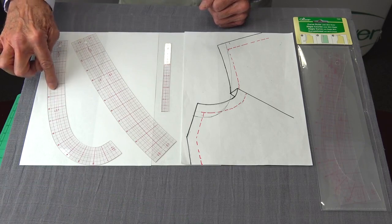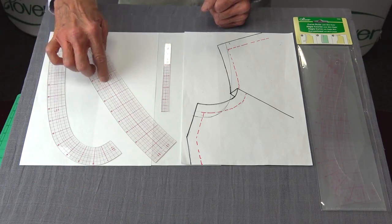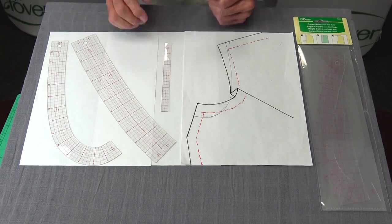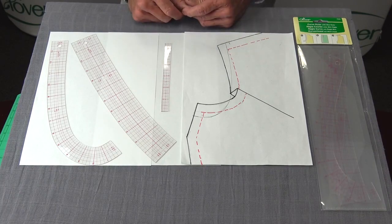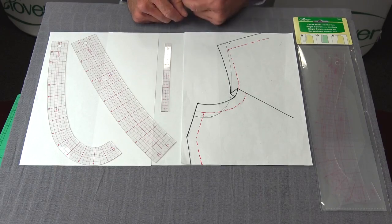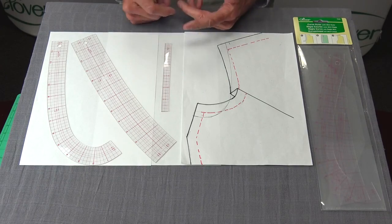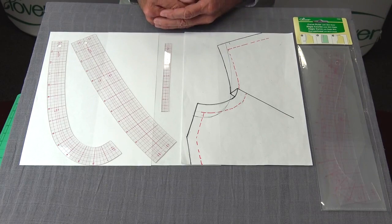What's included in that is our French curve, our hip curve, and a mini ruler. Now we know when we pull a pattern out of the envelope, it's not going to fit. We're going to have to make adjustments to the neckline, to the armholes, waistline, hip lines, darts, even the hemline.